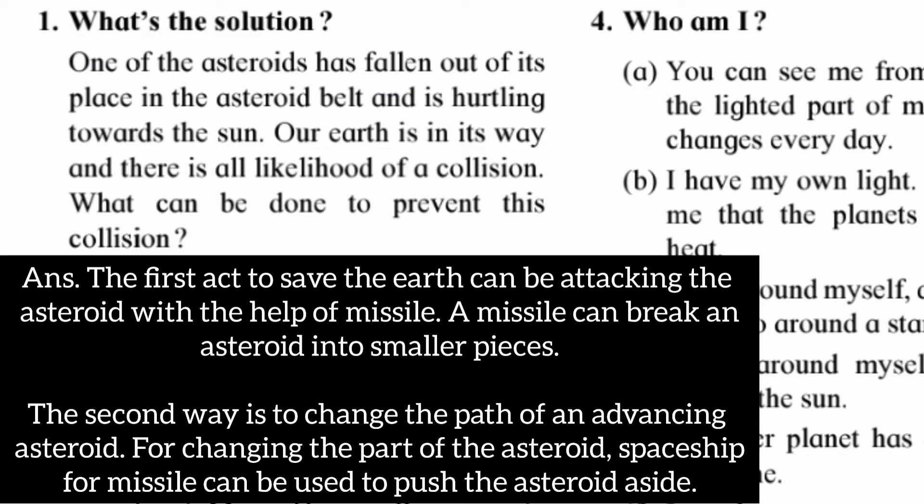Answer: The first act to save the earth can be attacking the asteroid with the help of a missile. A missile can break an asteroid into smaller pieces. The second way is to change the path of an advancing asteroid.